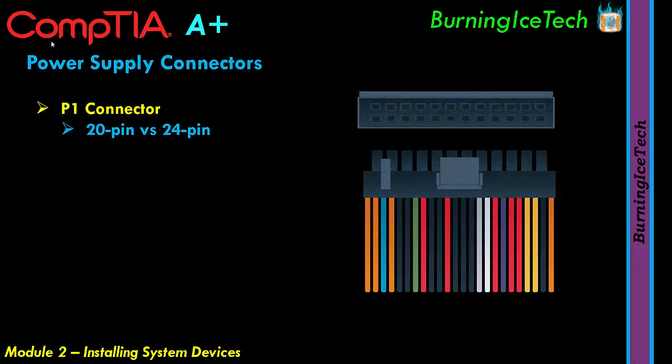Let's move on to our next topic: power supply connectors — the various cables connected to the power supply that connect to the assorted devices and components inside your case. The first and main cable is called your P1 connector. The P1 is the main one — if you look at all the cable strands coming from your power supply, there's going to be one with a big fat connector. That is your P1 connector. If you count the pins, you'll find there are 24 pins — two rows each containing 12 pins.